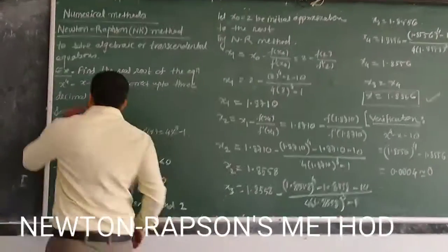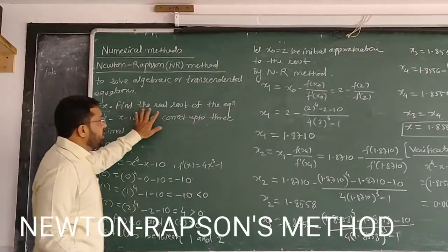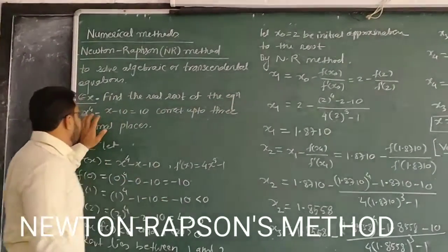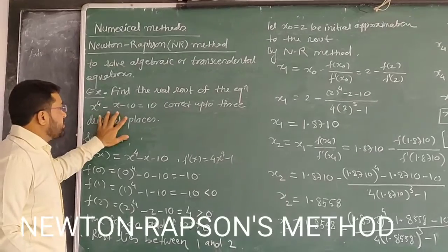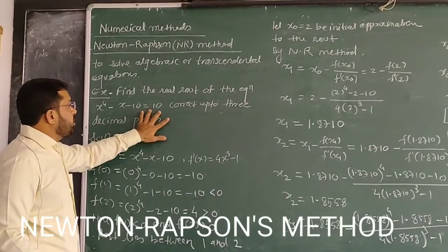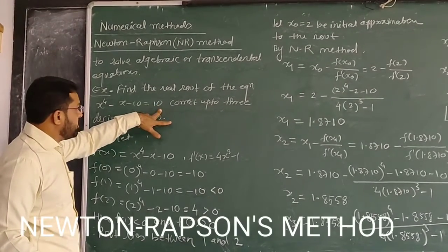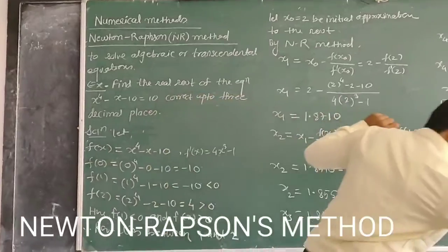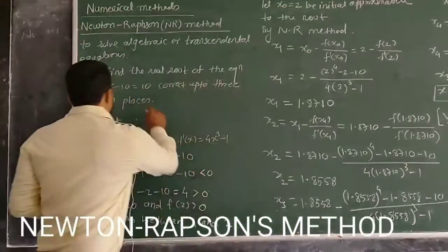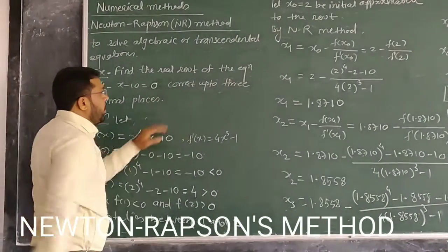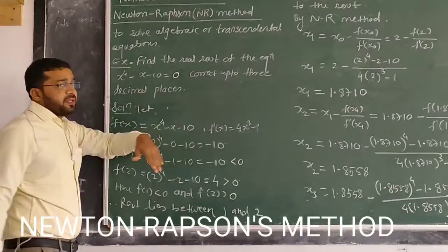Here is the example we have: Find the real root of the equation x to the power 4 minus x minus 10 equals zero. That should be zero, correct up to three decimal places. So we have to find the root of this fourth degree polynomial.